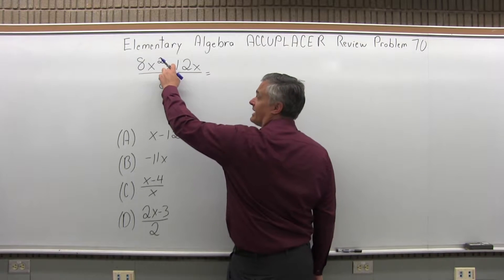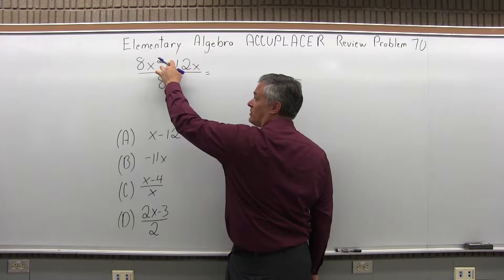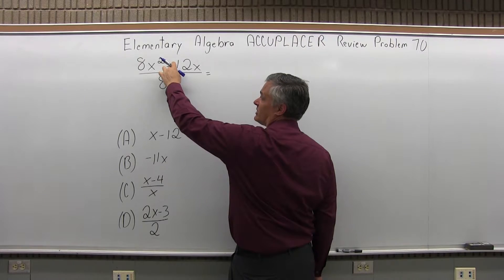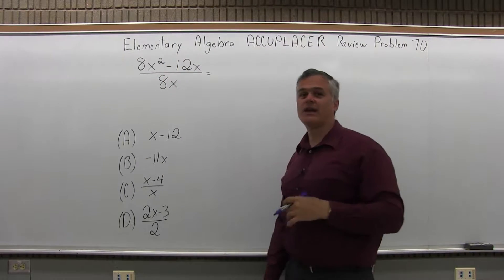If it were a multiplication between the two parts on the top, you could do something like that. But where it's an addition or subtraction, you have to factor what you can and then cancel.